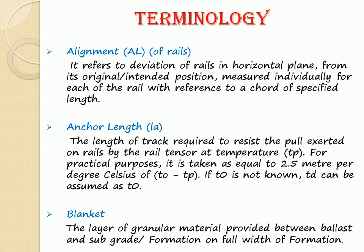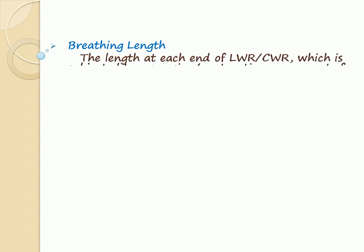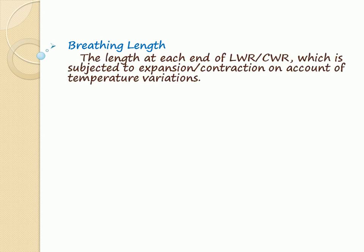Blanket: The layer of granular material provided between ballast and sub-grade formation on the full width of formation. Breathing Length: The length of each end of LWR/CWR which is subjected to expansion and contraction on account of temperature variations.